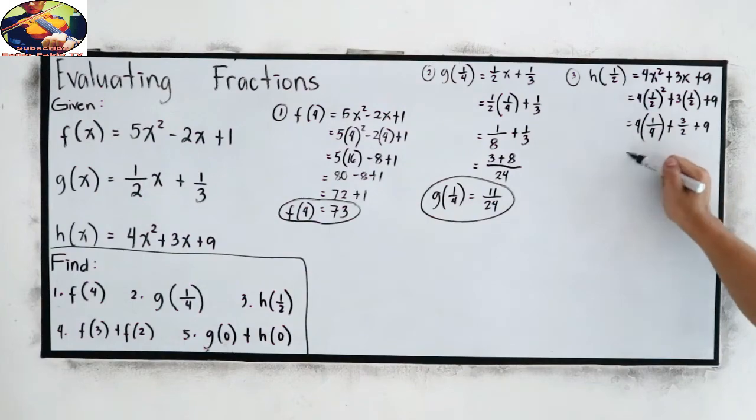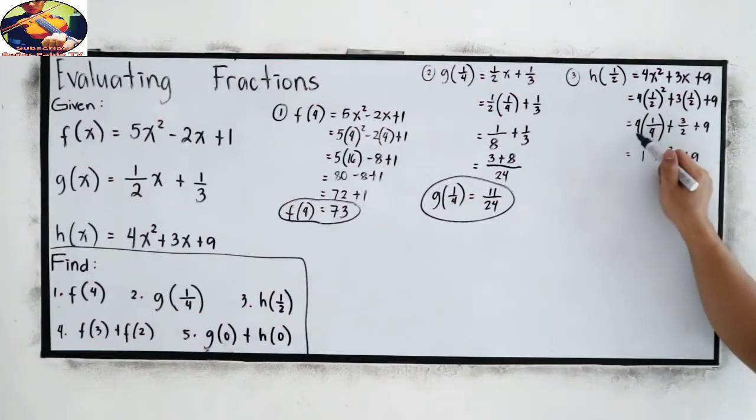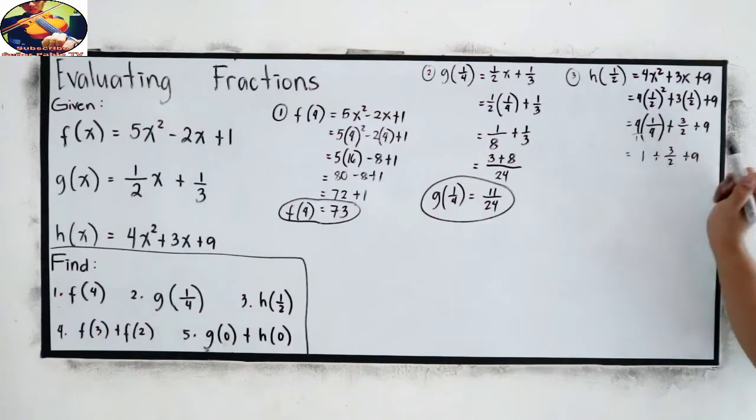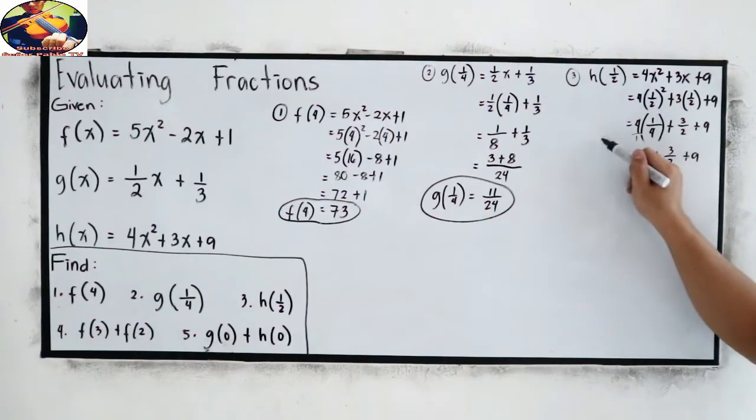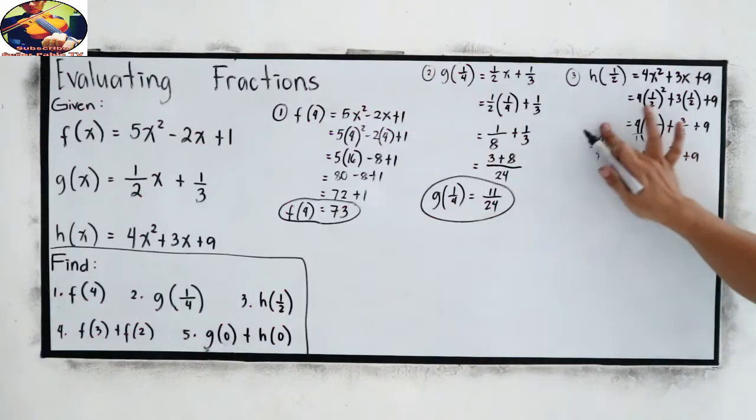Just copy that. Now, 4 times 1, that is 1, plus 3, over 2, plus 9. So, why 1? So, we know that 4 has a denominator of 1. So, 4 times 1, that is 4, over 1 times 4, that is 4. 4 divided by 4, that is 1.